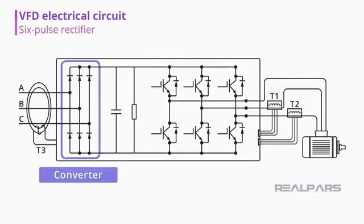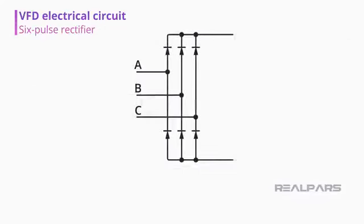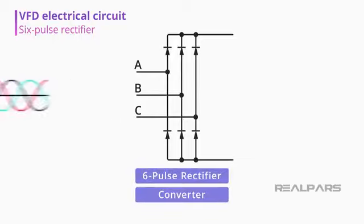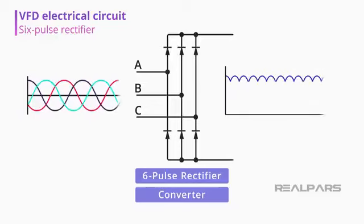Following, we have the Converter, also called a Rectifier. If we were to expand and look at the Rectifier Diagram, this is what it would look like. This is called a 6-Pulse Rectifier or Converter, and it's where the 3-phase alternating current gets converted into direct current by the use of diodes.